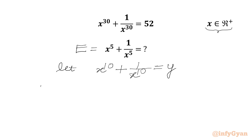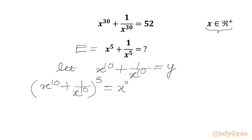Now we will write x power 10 plus 1 over x power 10, whole cube. Let us apply the a plus b whole cube formula. So we can write x power 10 whole cube, which is x power 30, plus 1 over x power 10 whole cube, which gives 1 over x power 30, plus 3 times x power 10 times 1 over x power 10.